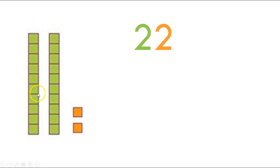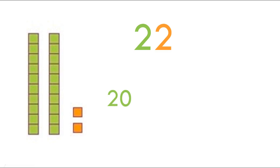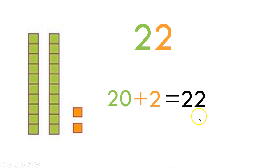Now we need to write our number sentence. Don't let this trick you up — we're not going to write ten because how many tens do we have? We have two tens, so we need to make it twenty plus how many ones did we have. We had two, so plus two. Twenty plus two equals twenty-two.